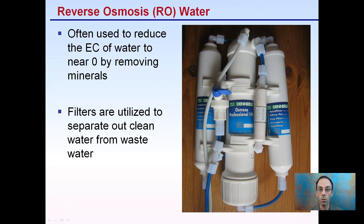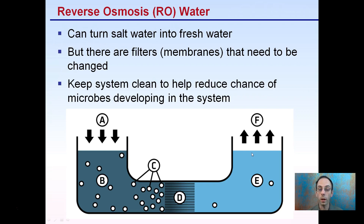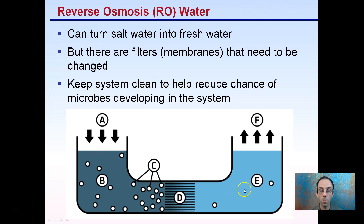What reverse osmosis can do is turn salt water into fresh water, but there are filters or membranes that need to be changed. Natural osmosis moves salt particles across the semi-permeable membrane, but reverse osmosis works in the opposite way — it takes water and forces it across a membrane where it doesn't want to go. A couple of molecules will sneak through, but for the most part the result will be very close to pure water. These membranes need to be changed over time because they can clog depending on the water you're trying to purify.